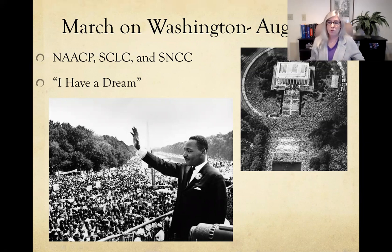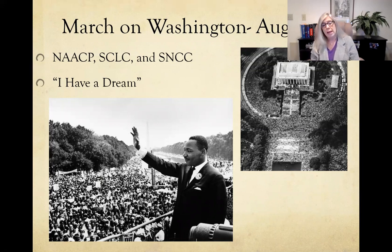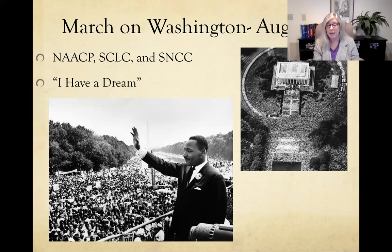By 1963, the March on Washington actually happened. A. Philip Randolph — who first proposed it during World War II — came back with Bayard Rustin, and the two of them planned and carried out the March on Washington, working with SCLC and SNCC chapters across America to coordinate transportation. Estimates are that upwards of 250,000 people showed up. Though Randolph conceived the idea, we most associate the March on Washington with Martin Luther King because of his powerful 'I Have a Dream' speech about his vision of an integrated, equal United States.